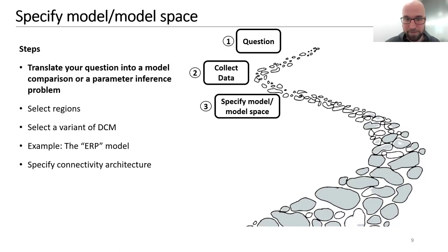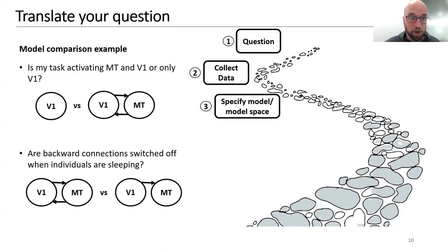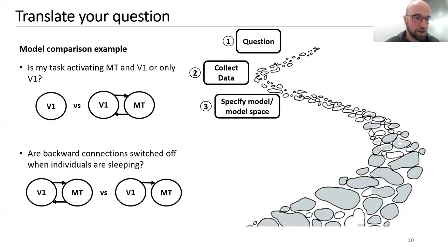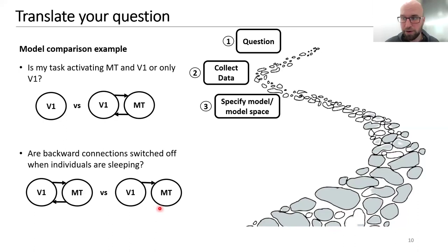One question could be: is my task activating MT and V1, or only V1? This comes down to a model comparison where you compare a model with only V1 to one where V1 is connected to MT. A second example: are backward connections switched off when individuals are sleeping? You could compare a model with both forward and backward connections to one with only forward connections, and if model comparison favors the one without backward connections when fit to sleep data, that would suggest backward connections are switched off during sleep.